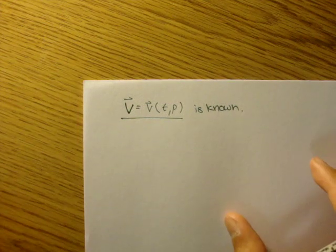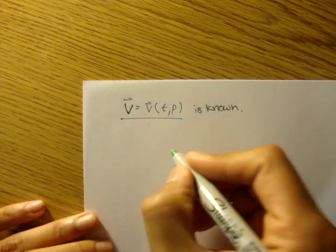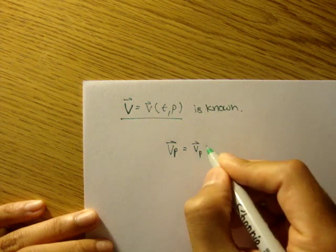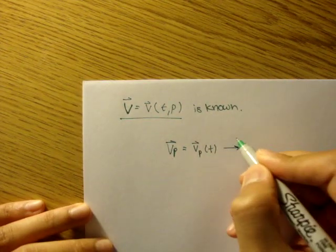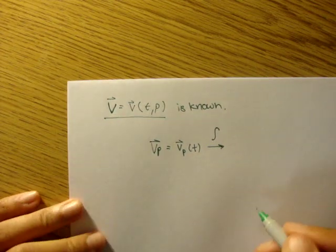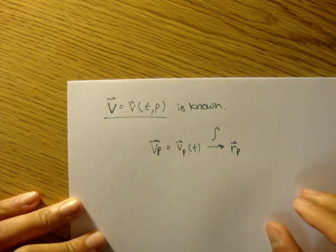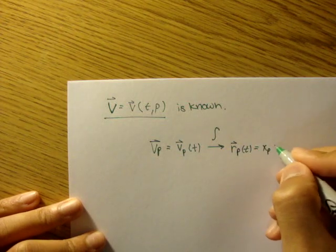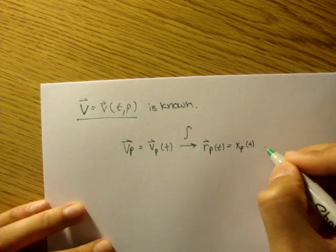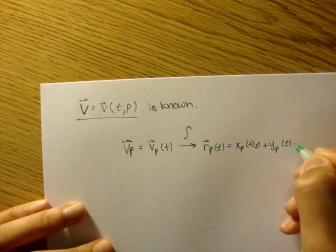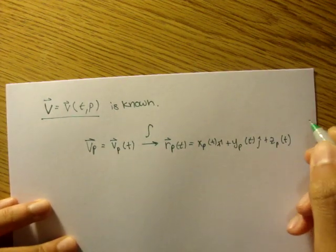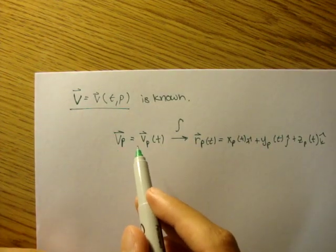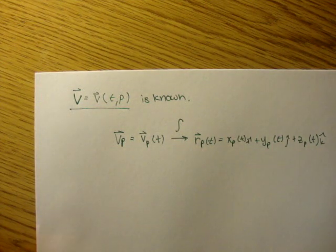Now, you know from dynamics or physics that if you were to integrate a velocity, you would get a position. You would get the position function. And of course, that position function would be equal to the x-coordinate of that particle plus the y plus the z, right? Now you integrate the velocity, you get a position, of course, plus c, but we'll just ignore that for now.